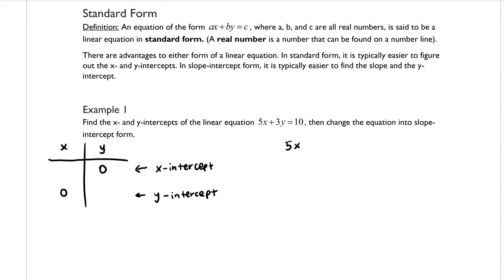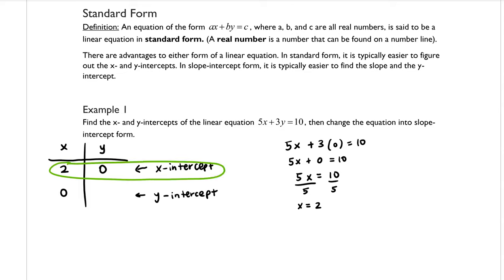Let's start by plugging in y equals 0. We get 5x plus 3 times 0, which simplifies to 5x equals 10. Dividing both sides by 5, we get x equals 2. So our x-intercept is the ordered pair 2, 0.